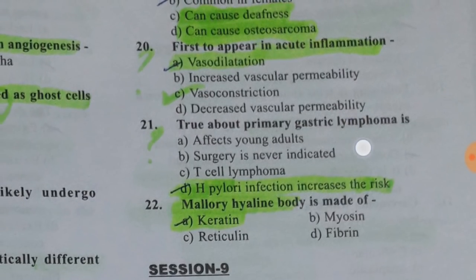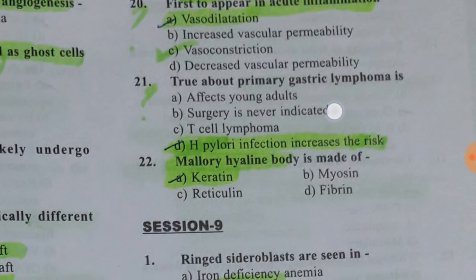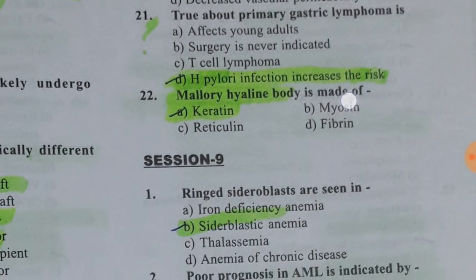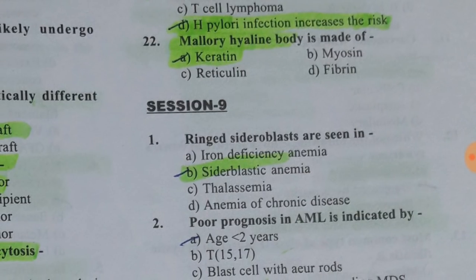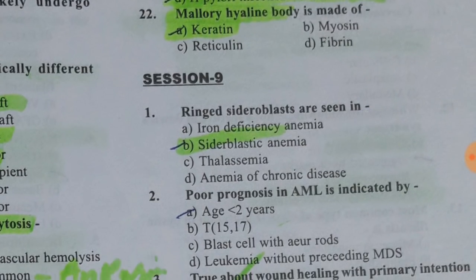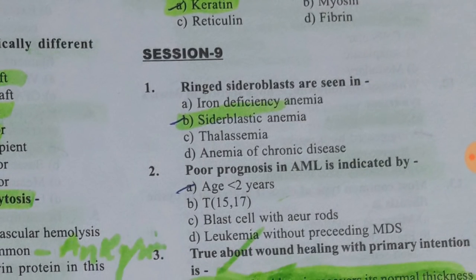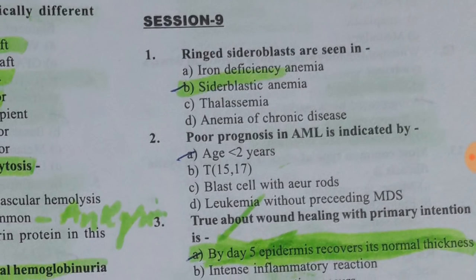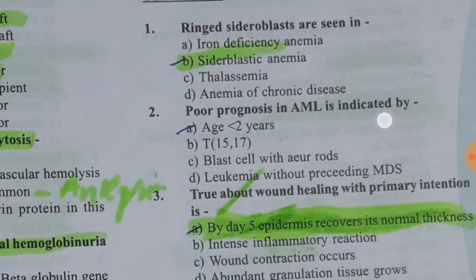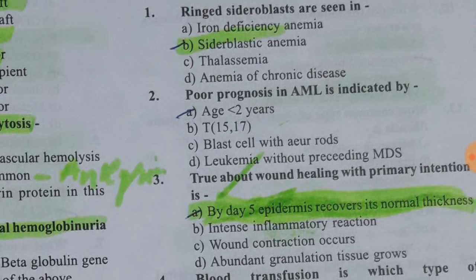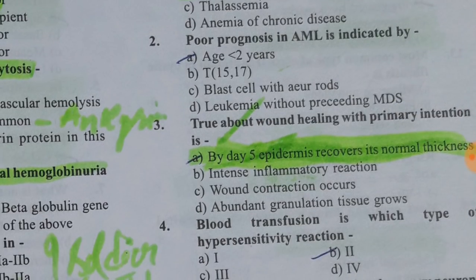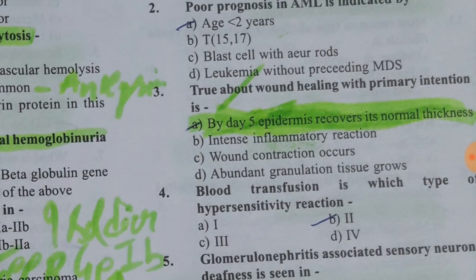Mallory hyaline body is made of keratin. Ring sideroblasts are seen in sideroblastic anemia. You should know the good and poor prognosis markers in AML. Regarding wound healing by primary intention — by day five the epidermis recovers its normal thickness, so read the wound healing process carefully.